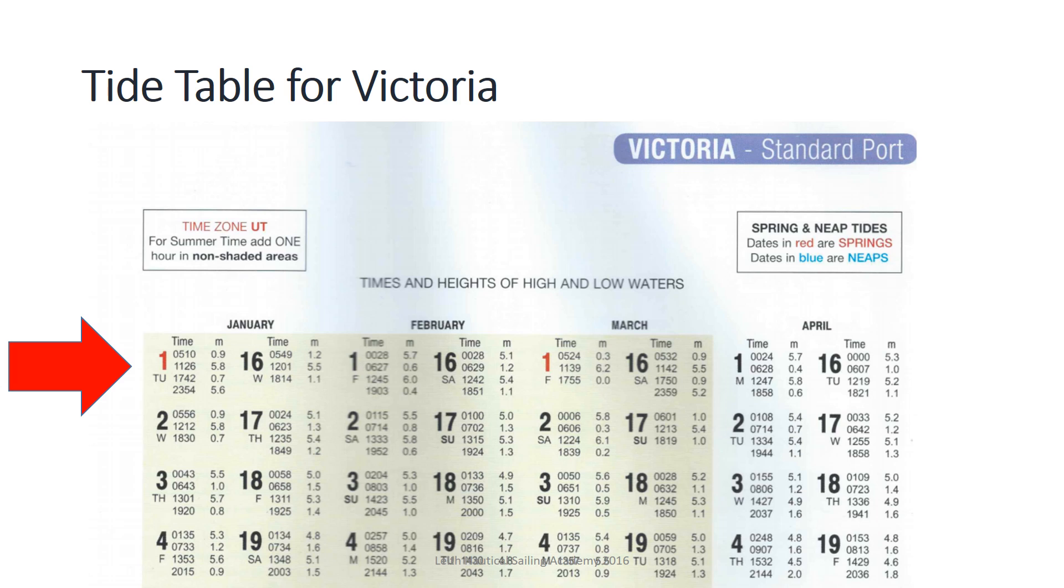So the tide table will give us the heights of high water and low water but they don't give us the height of tide at any point in between. To find that we need to use the tidal graph.